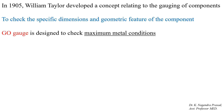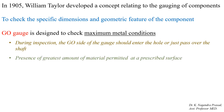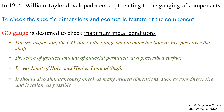According to Taylor's principle, a gauge is designed to check the maximum metal condition. The go side of the gauge should enter the hole or just pass over the shaft during inspection. Maximum metal condition is the presence of the greatest amount of material permitted at a prescribed surface. The maximum metal condition for a hole is the lower limit, and for a shaft is the higher limit. So go gauges are used to check the lower limit of the hole and the higher limit of the shaft. Go gauges also simultaneously check as many related dimensions such as roundness, size, and location as possible.